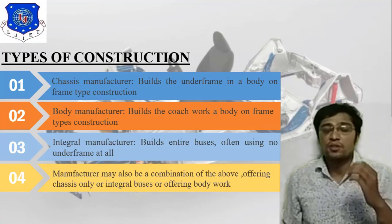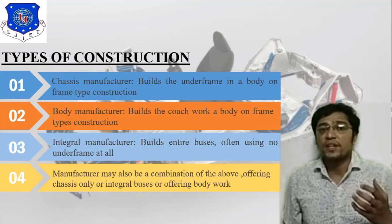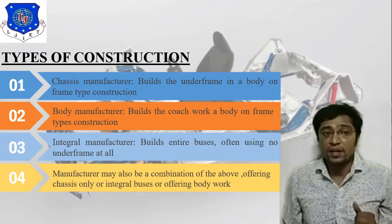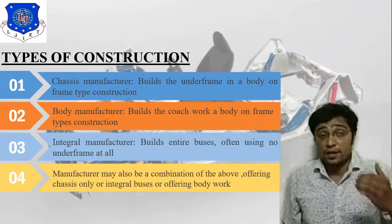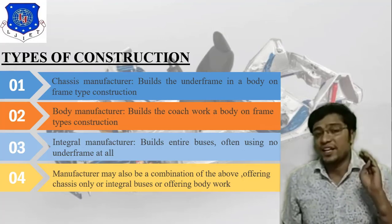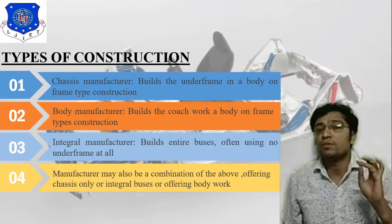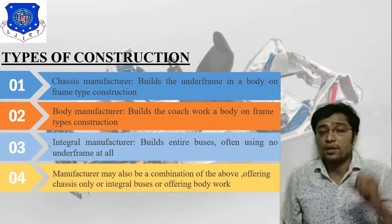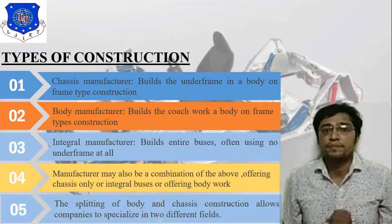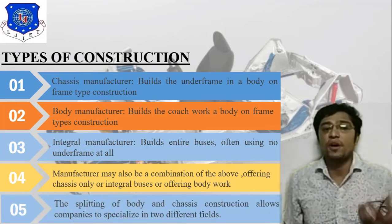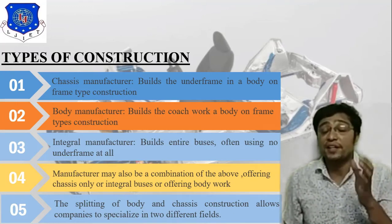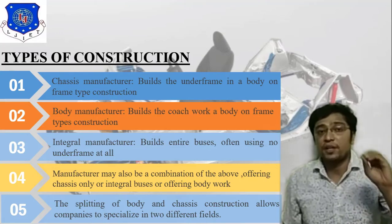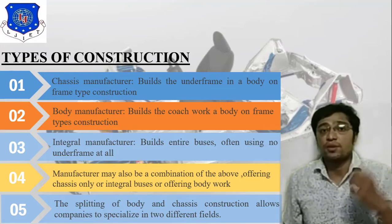A manufacturer may also be a combination of the above, offering chassis only, or integral buses, or offering bodywork. In this bodywork, if you consider bus body, you need to consider the frame, axle, chassis, body, and integral manufacturer. Integration of all these parameters allows you to construct the bus body. The splitting of body and chassis construction allows companies to specialize in two different fields — according to application and specialization.